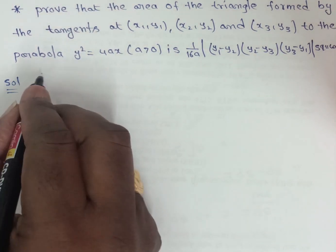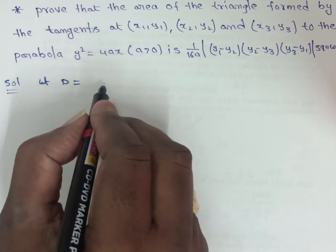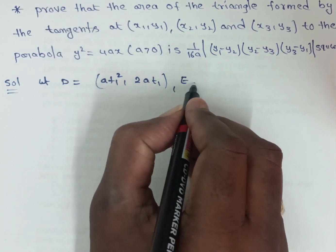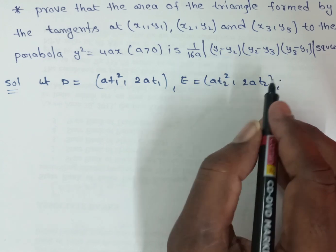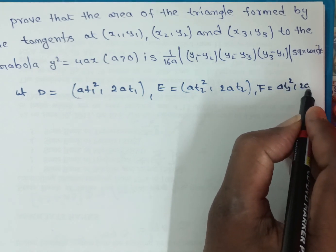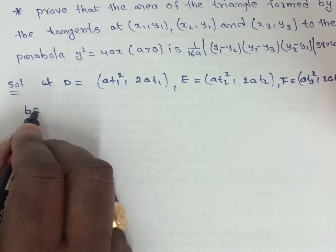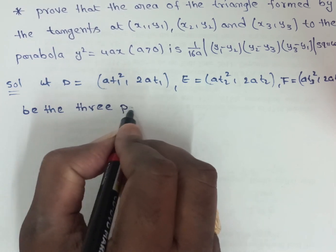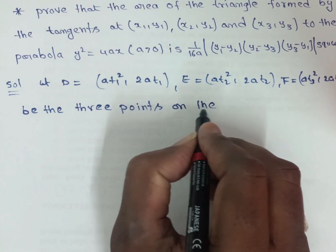First, let the equivalent parametric points be confirmed. Let D = (at1², 2at1), E = (at2², 2at2), and F = (at3², 2at3) be the three parametric points on the parabola y² = 4ax.